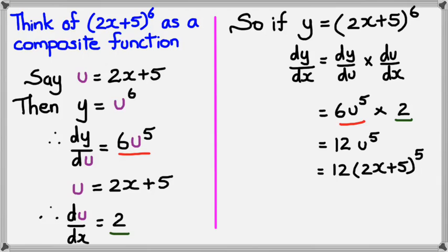So if you differentiate y equals 2x plus 5 to the power of 6, you would get 12 times 2x plus 5 to the power of 5. Is there a shorter way to do this? Yes there is, and I'm going to show you that in the next slide.